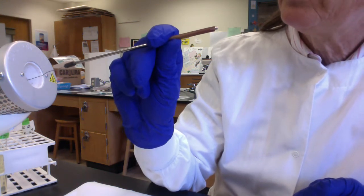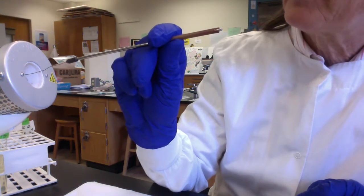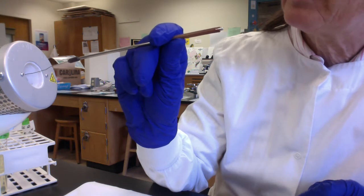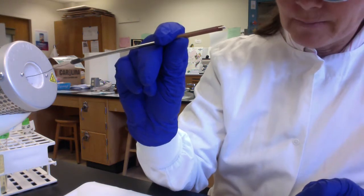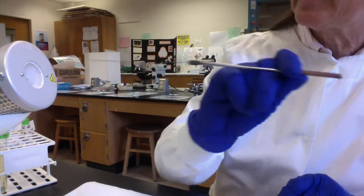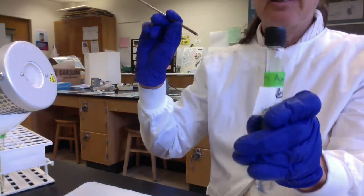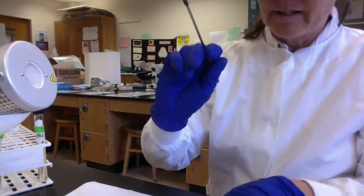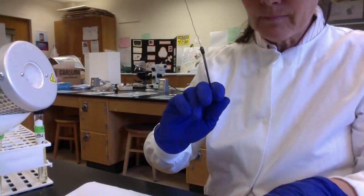So we'll do that one for the second motility agar deep. This is, like I said, this will be kind of fun to see. This is going to be Bacillus cereus. So I have a second motility agar deep. So again, I sterilize my needle.